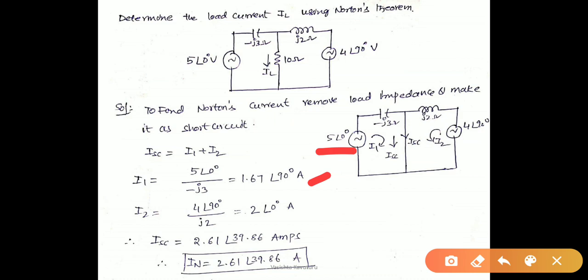I2 is the current in the second loop, given as 4 at an angle 90 degrees divided by J2, therefore it is 2 at an angle 0 degrees. Therefore IAC, the summation of I1 and I2, is 2.61 at an angle 39.86 amperes. The short circuit current is also called Norton's current, therefore IN equals 2.61 at an angle 39.86 amperes.